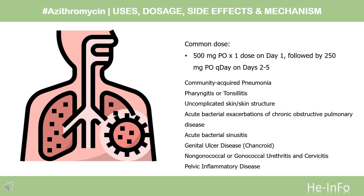The dose of this medicine will be different for different patients. For community-acquired pneumonia due to Chlamydophila pneumoniae, Haemophilus influenzae, Mycoplasma pneumoniae, or Streptococcus pneumoniae: 500 mg PO x1 dose on day 1, followed by 250 mg PO daily on days 2 to 5. For pharyngitis or tonsillitis caused by Streptococcus pyogenes as an alternative in individuals who cannot use first-line therapy: 500 mg PO x1 dose on day 1, followed by 250 mg PO daily on days 2 to 5.